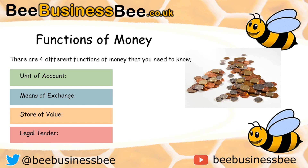Thirdly, money is a store of value — it's an asset that you can save, retrieve, and exchange at any time. If you give me £20 now, I can keep that and turn it into value at a later date. You have to consider inflation, but even so it remains a store of value — maybe worth £19.50 rather than the full £20, but still valuable. Last but not least, money is legal tender: it is legally accepted and valued by a government or country as a form of payment. And that's partly what makes money work — the combination of those four different functions gives money its purpose.